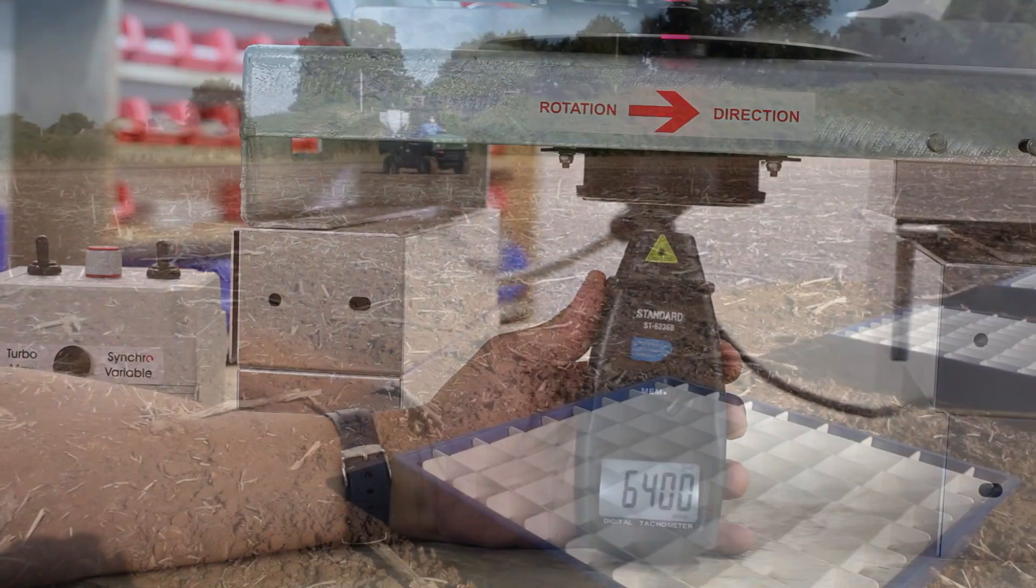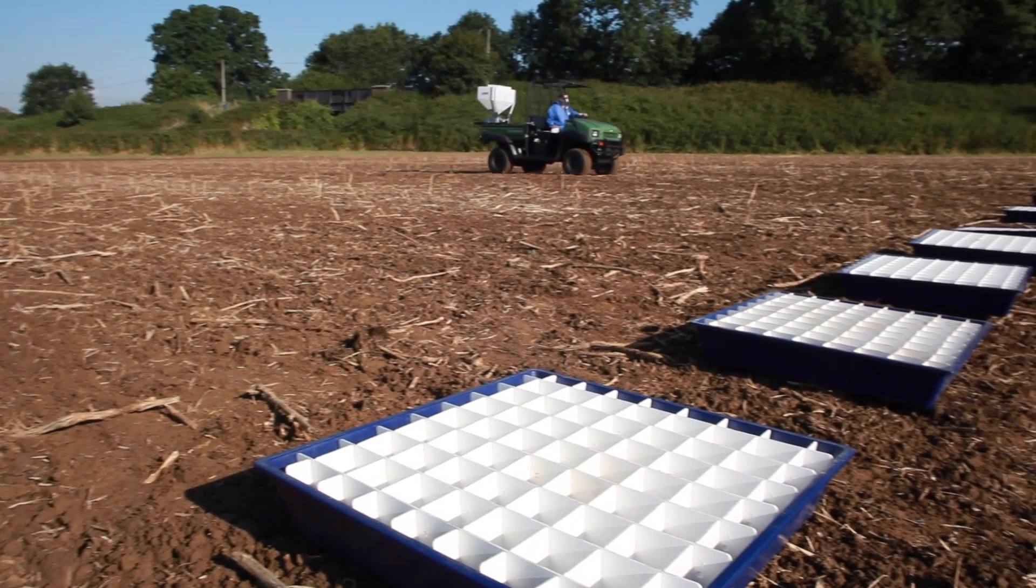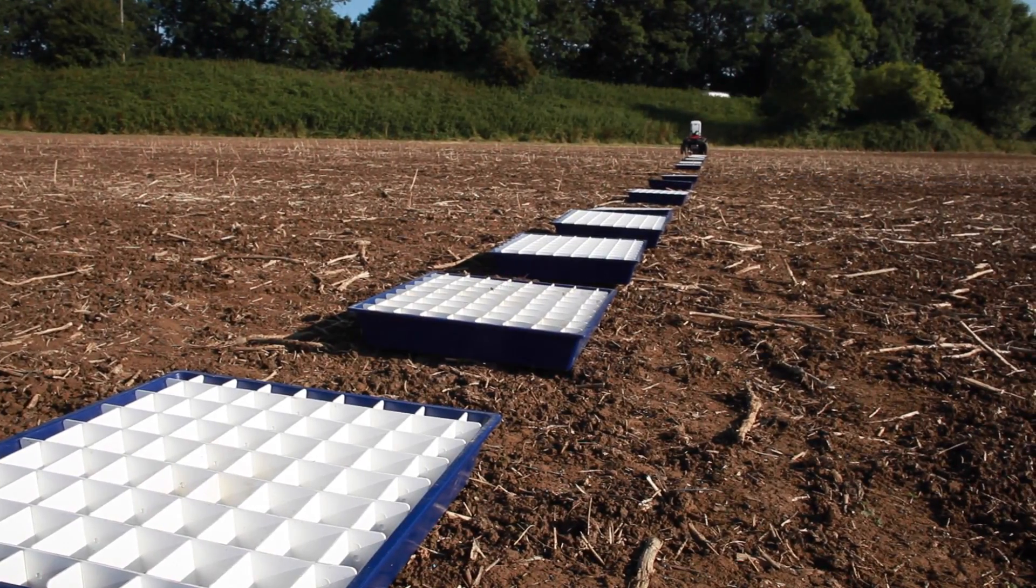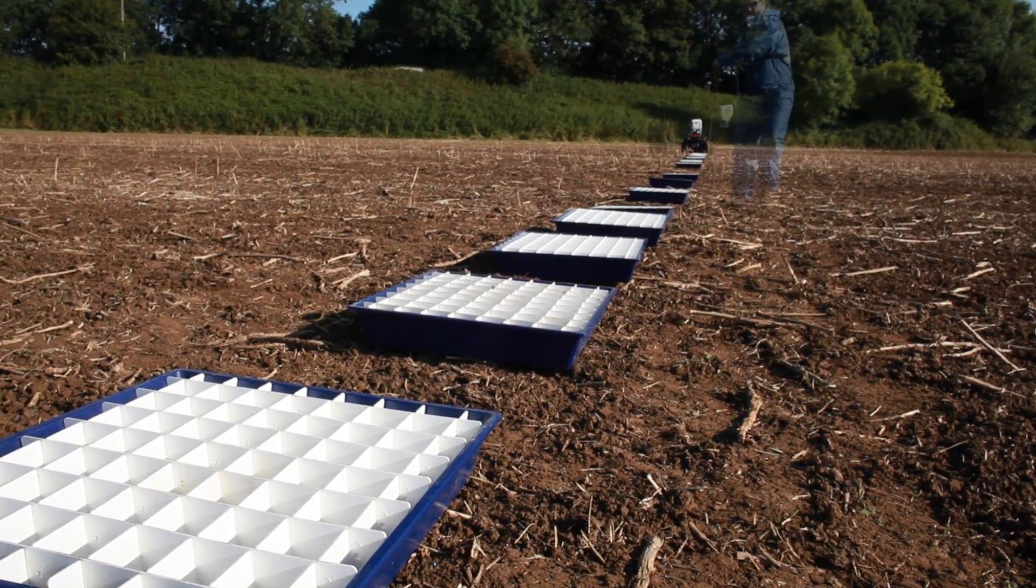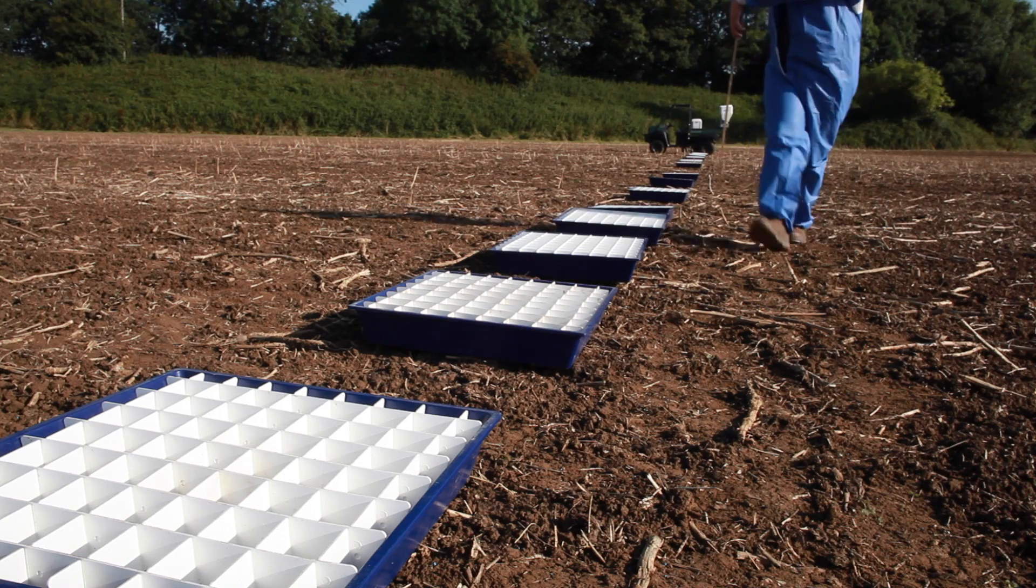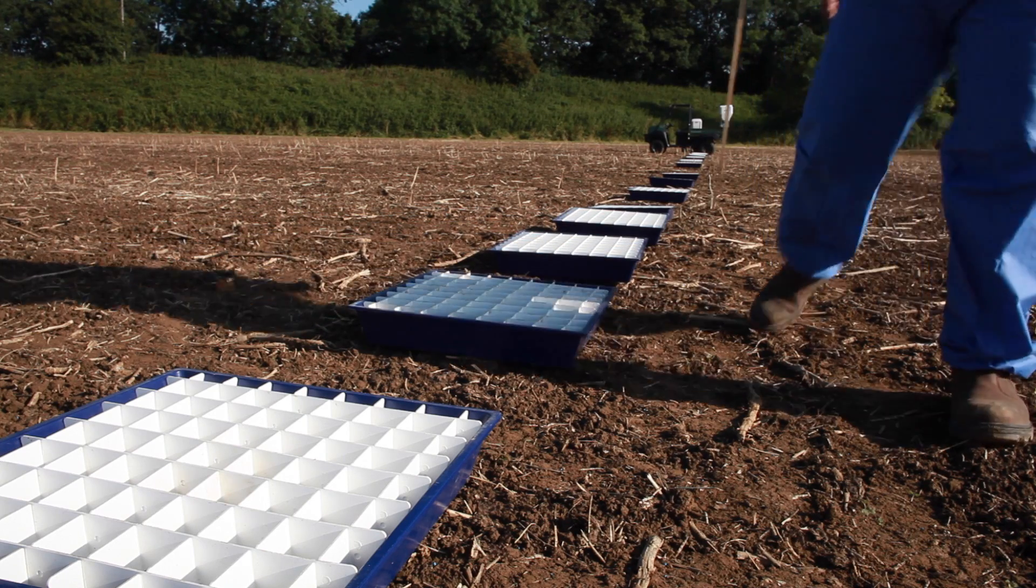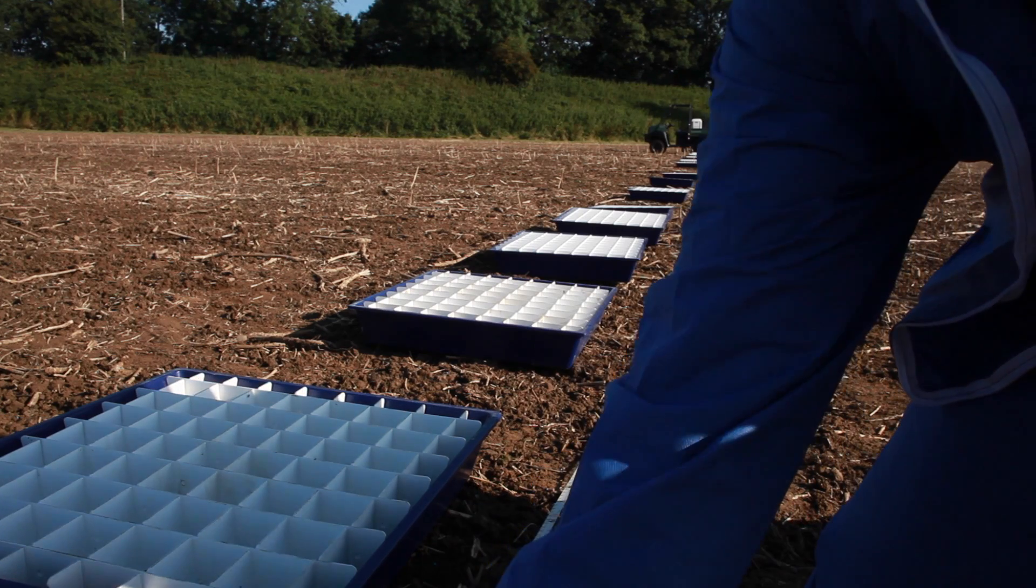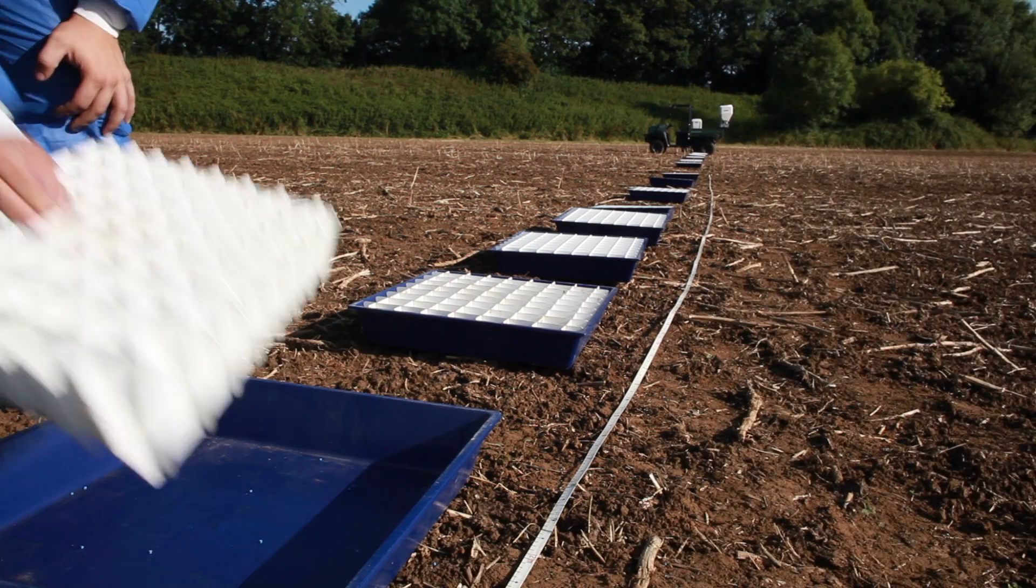We are now showing the EBC TFL 120 model series, which is the high-capacity motor, suitable for larger machines including this UTV shown here. We have calibrated this to spread the ESP slug pellet at a rate of 5kg per hectare, at a speed of 15km per hour, at a width of 24m.